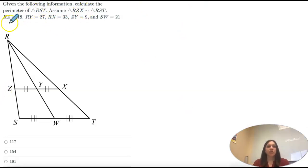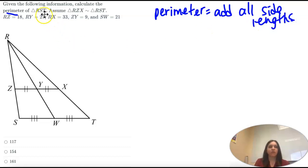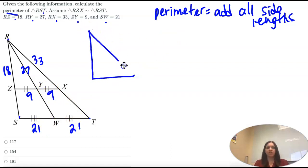So given the following information, we want to calculate perimeter. So perimeter means add up all the side lengths. We want to find the perimeter of RST. So that's the whole big triangle. Let's see what we're given here. R to Z is 18. R to Y is 27. R to X is 33. Z to Y is 9. And S to W is 21. So again, those are the same. Those are the same. So I want to find the perimeter. So that means I need to know every side length. So I know the bottom is 21 plus 21. Which is 42. But on the sides, I only know of half. So we need to figure out what this length is. And what this length is.